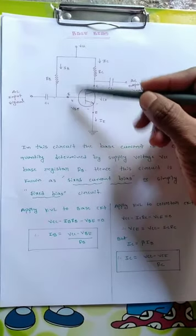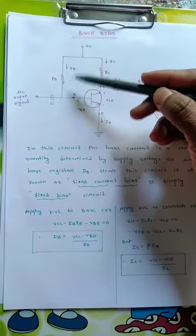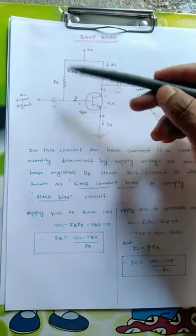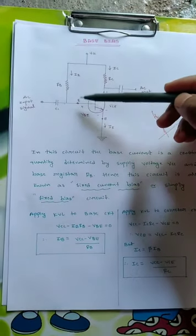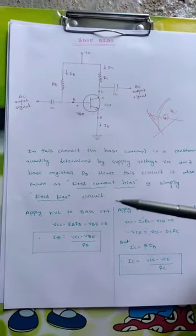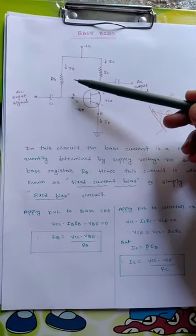The base current is defined by VCC and the fixed resistance RB, which is applied between VCC and base. Depending on RB and VCC, the IB value will be decided. That's why it's called fixed current bias, because the RB value cannot be changed.